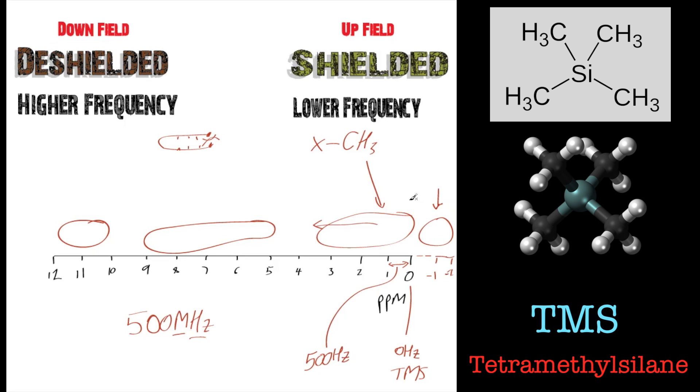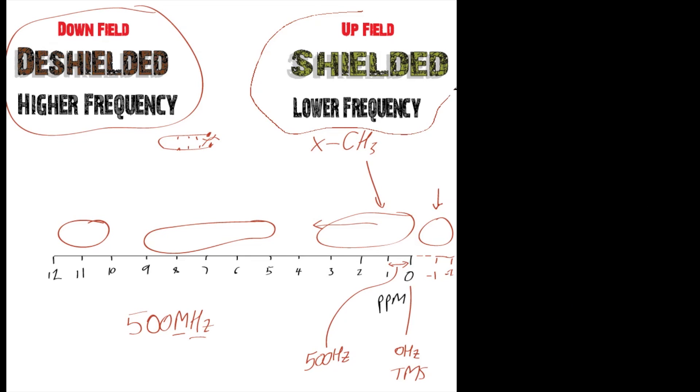So 1 PPM is 500 hertz, 2 PPM is 1000 hertz, 1500, 2000, 2500, and so on and so on. So it goes from the lower frequency to the high frequency. So I think basically, the take-on message is downfield means deshielded, also means higher frequency. Upfield means shielded, and also means lower frequency as well.